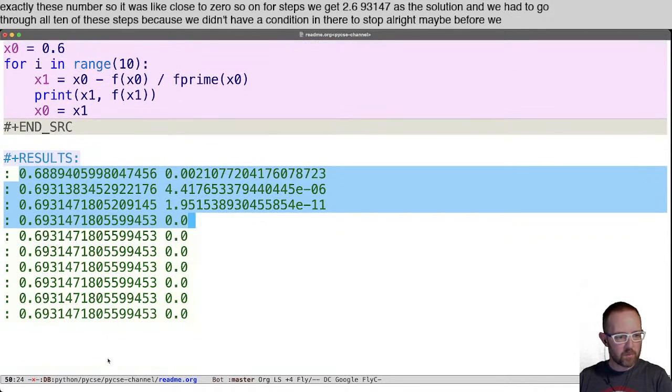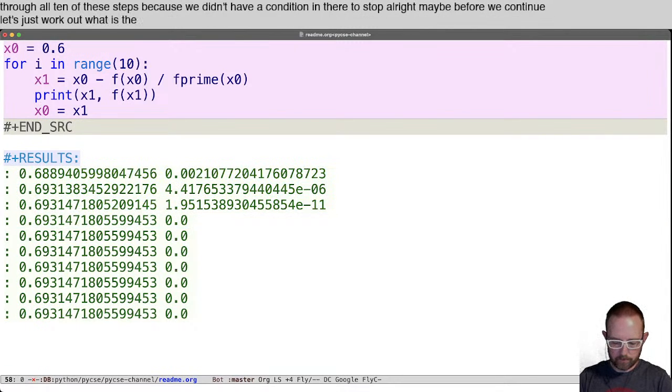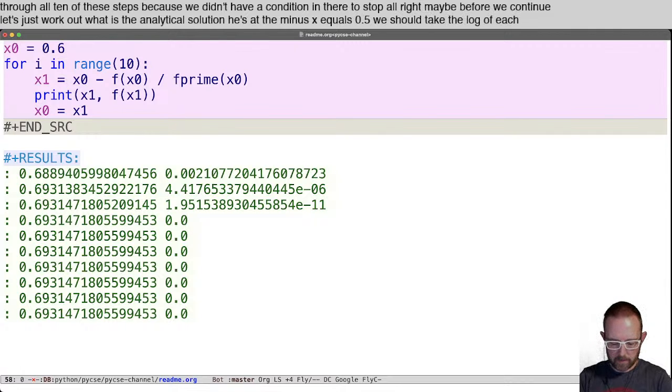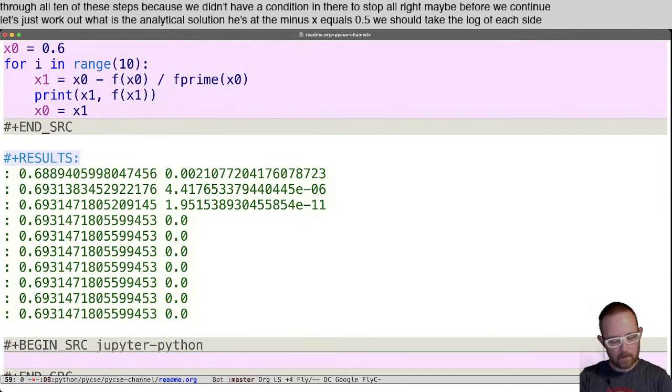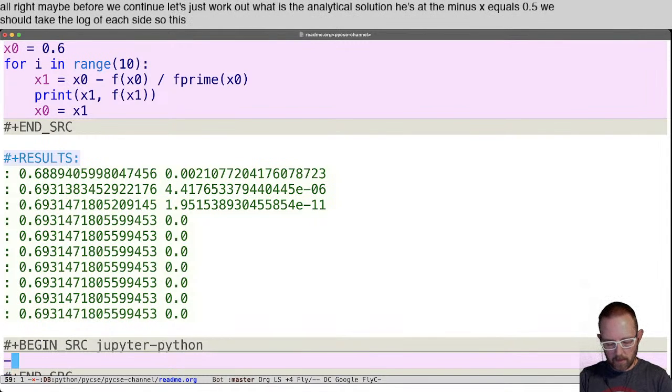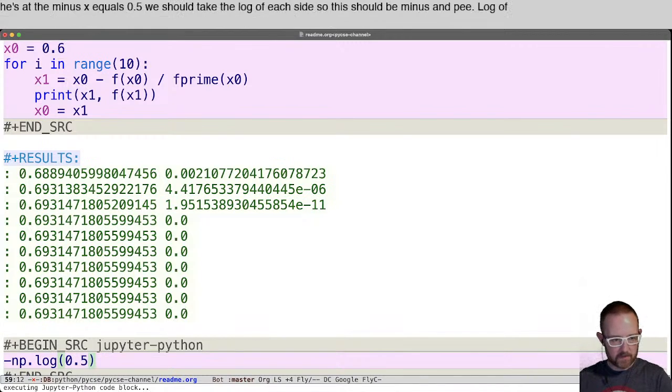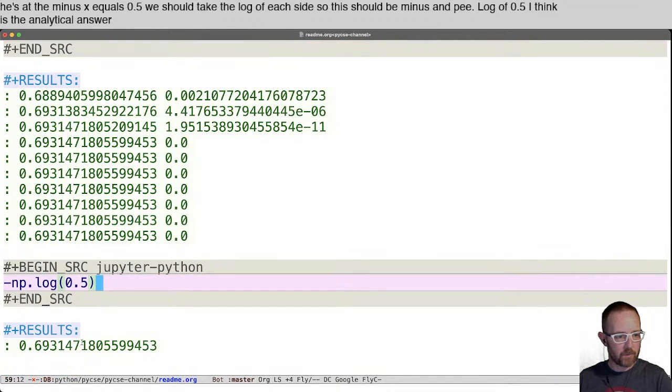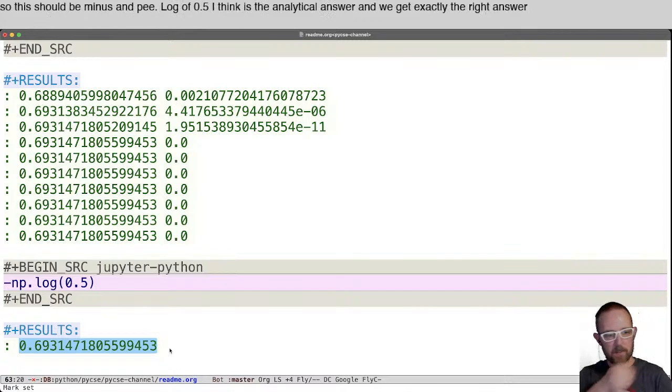All right, maybe before we continue, let's just work out what is the analytical solution. E to the minus x equals 0.5. We should take the log of each side. So this should be minus np.log of 0.5, I think is the analytical answer. And we get exactly the right answer in here. Okay, so this is the analytical answer.